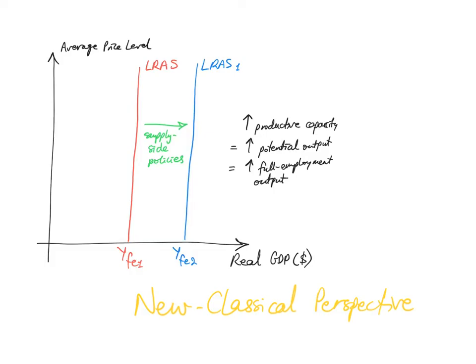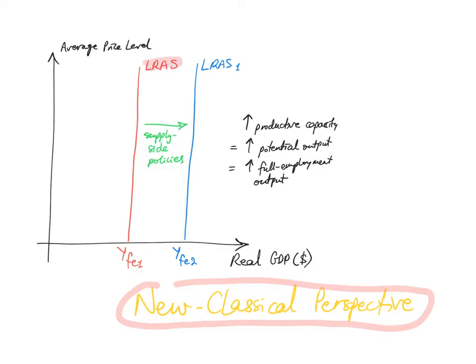If we have a look at the neoclassical perspective, the vertical LRAS will shift from LRAS to LRAS 1. This means that there has been an increase in productive capacity, which also means there has been an increase in potential output. Remember, potential output is different from actual output.